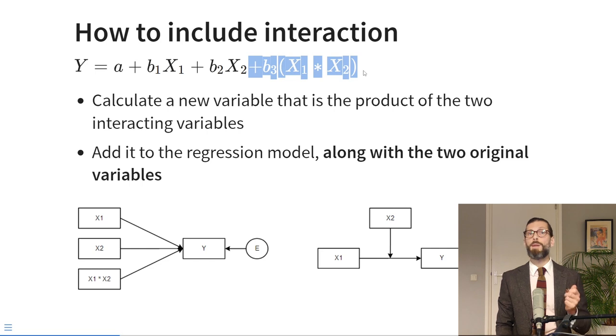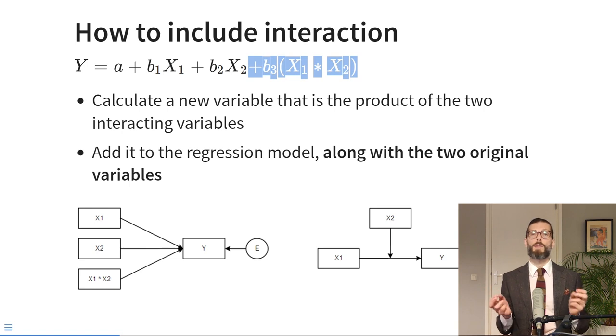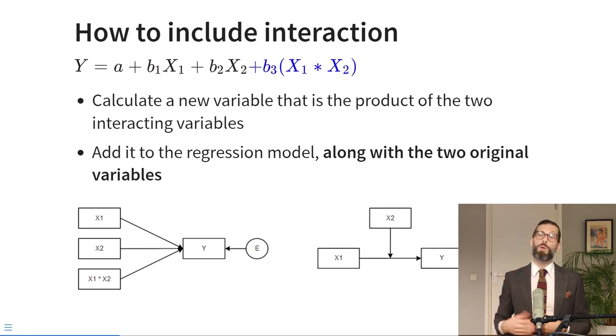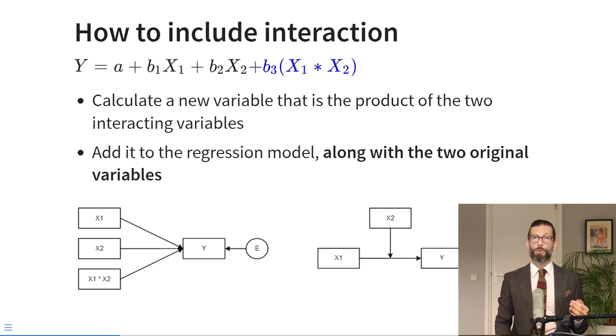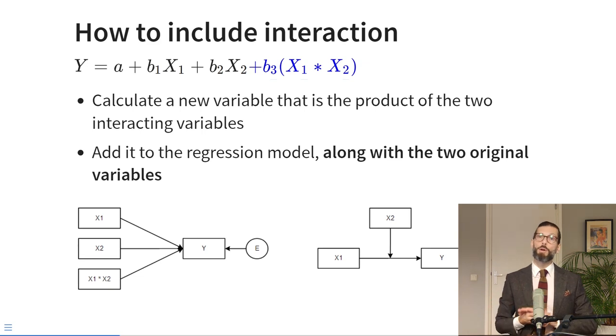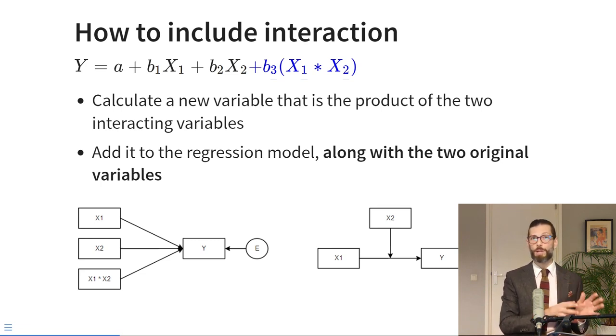Both treatment and sex are dummy variables, so you would be multiplying binary dummy variables to get a product term. To get an interaction term, you take the two interacting variables, multiply them together to get a product term, and add that product term to your regression model. In the formula, that looks like plus b3 times x1 times x2. You always have to include the two original variables that the product term is composed of — you can never include an interaction effect without also including its two constituent variables.